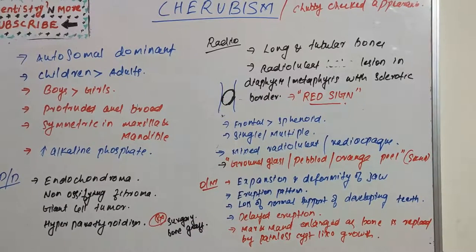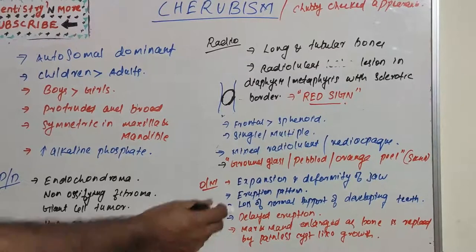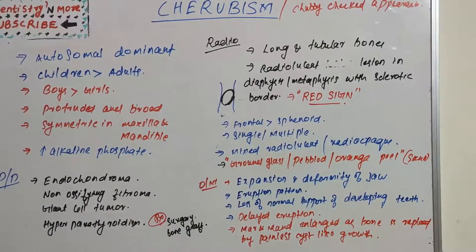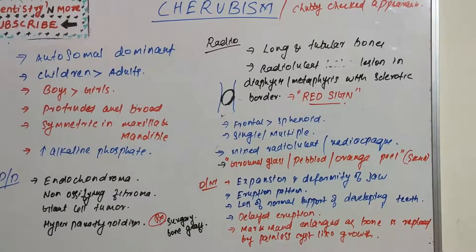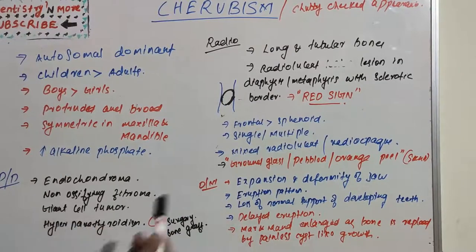In oral manifestations, there will be expansion and deformity of the jaw, the eruption pattern will be different, and there will be loss of normal support of the developing teeth. There will also be delayed eruption, which is due to endocrine disturbances. The maxilla and mandible are enlarged and replaced by the painless cysts.